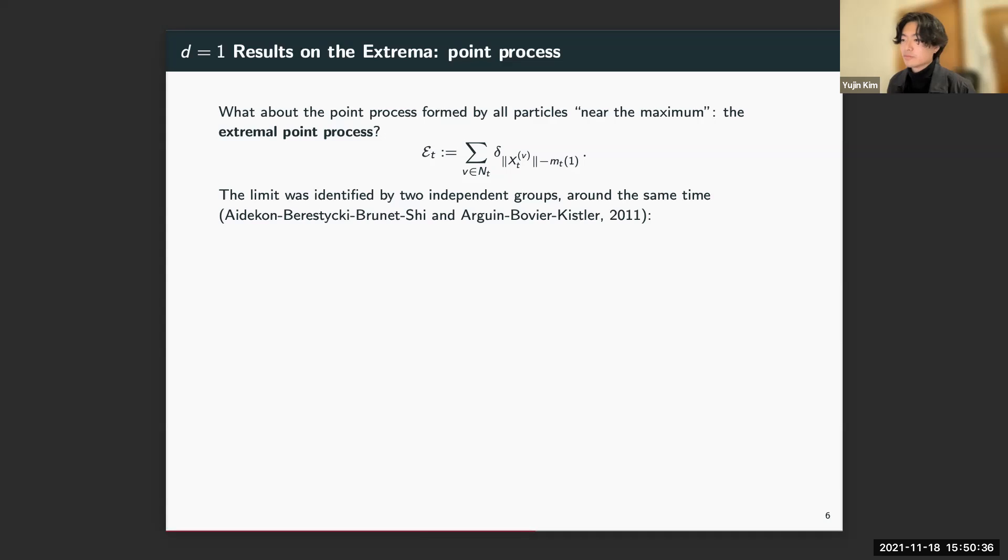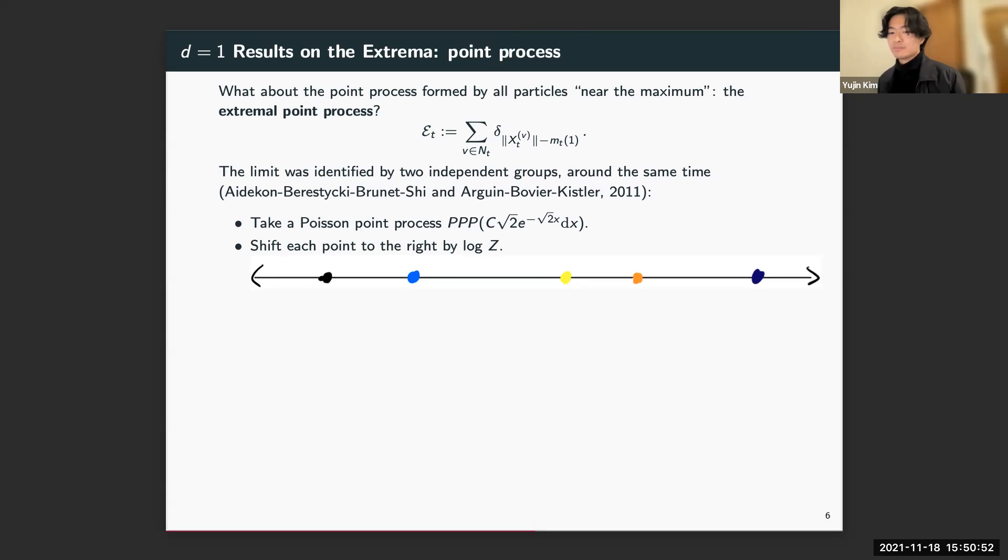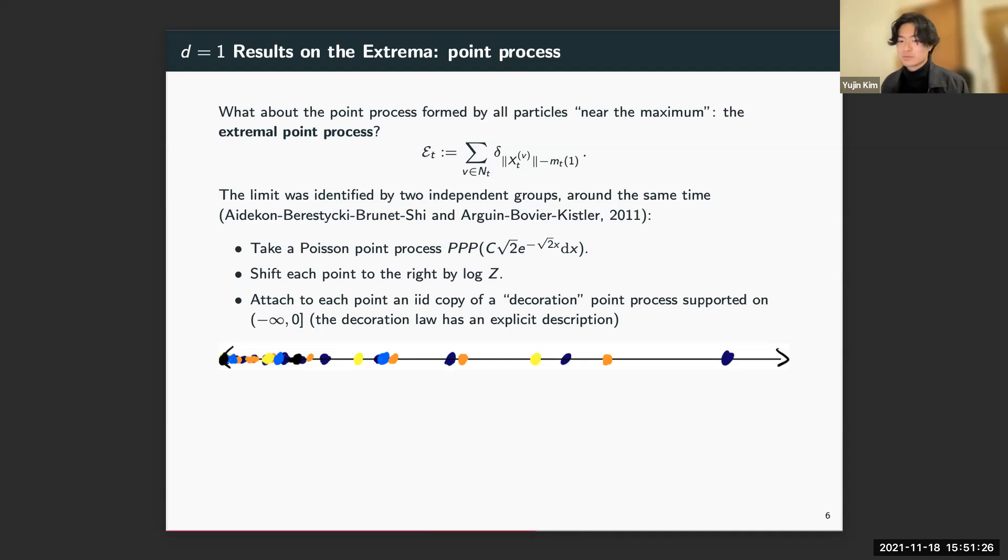So what is this exactly? I have some illustration. Let's start with a Poisson point process with this intensity here. I drew in color some Poisson points. Now each point gets shifted to the right by log of the derivative martingale, so log Z. Now each Poisson point has a point process attached to it—this is what's called the decoration point process. Here I've just drawn the decoration for a single Poisson point. This point process is supported on (-∞, 0), so the points appear to the left of the Poisson point. The decoration for each Poisson point is IID. Here I've drawn the full process with lots of colors, with the decorations colored the same as their corresponding Poisson point.